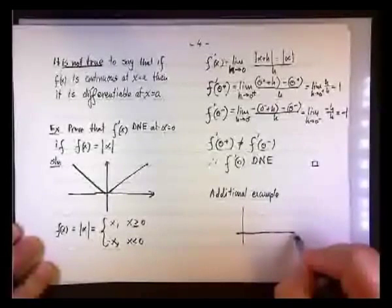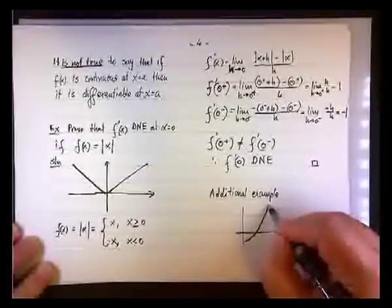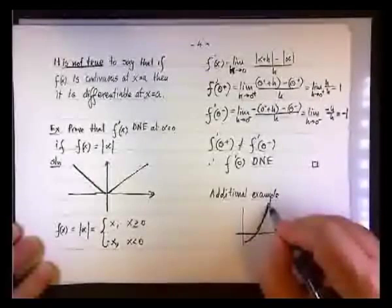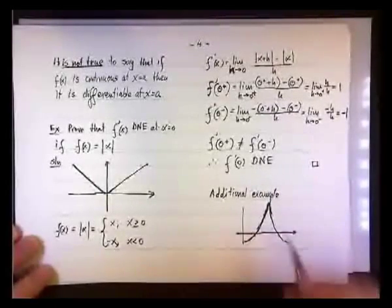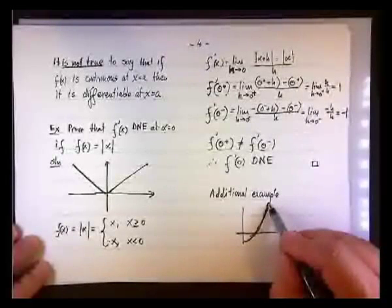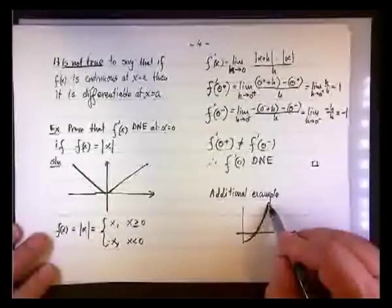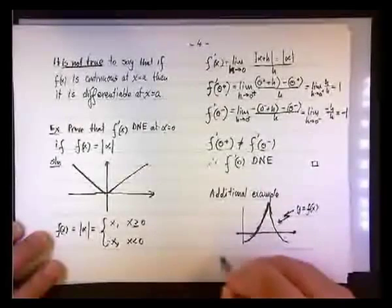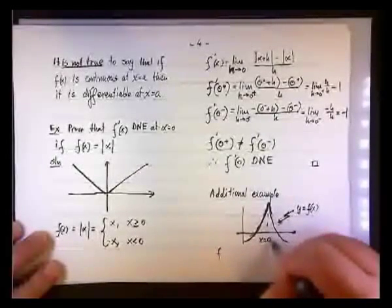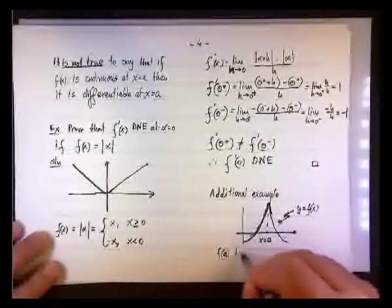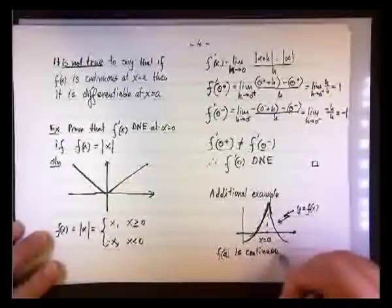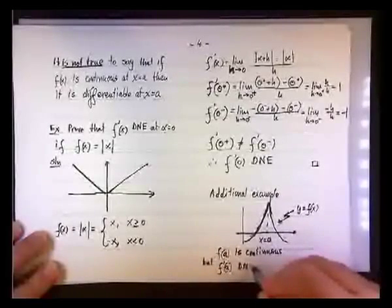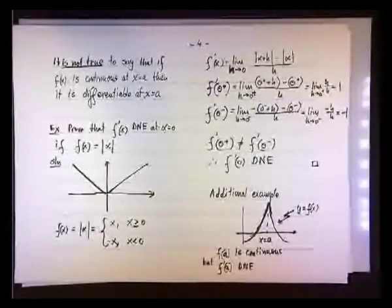Additional examples would be something like this. If you have a spike function, right? What is a spike function? Something like that. Well, this function is continuous. This is getting together, it's not going to infinity. So it's continuous but not differentiable. So this is y equals f(x), and we're going to say that this is x equals a, right there. And we're going to say that f(a) is continuous, but f'(a) does not exist. So the function is continuous but not differentiable.